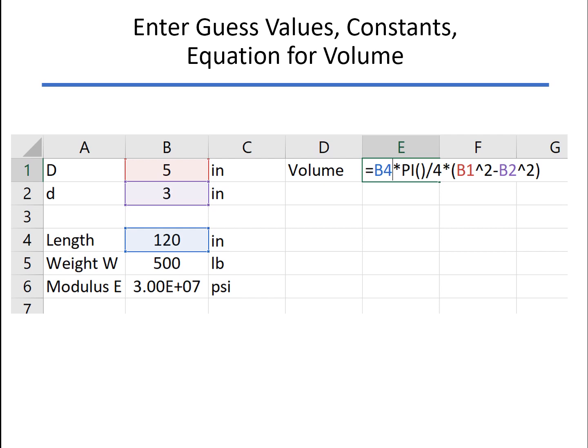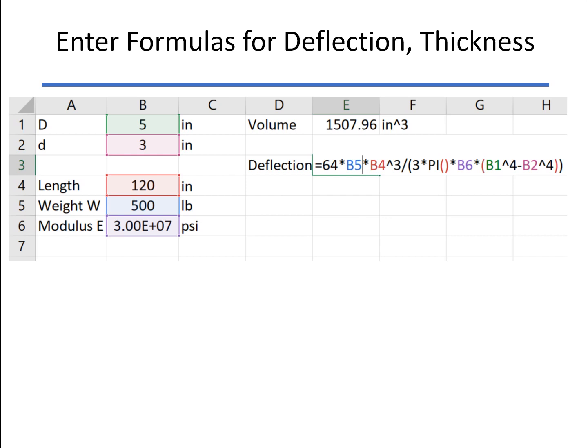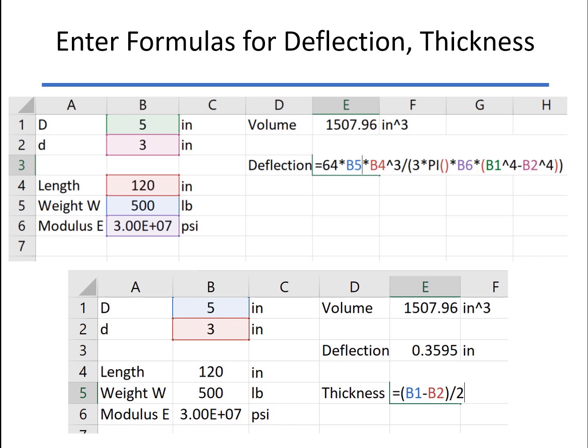And now we have an equation for the volume. Next we add a formula for the deflection, kind of that long equation there. And then the thickness is just one half of the difference in the outer and the inner diameter. So now we've got all our formulas set up.